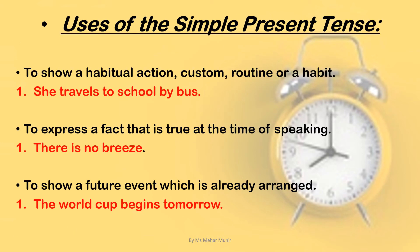Now let's understand the situations when we use simple present tense. First, to show a habitual action, custom, routine, or habit — for example: She travels to school by bus. This shows her daily routine, so we use simple present tense. Second, to express a fact that is true at the time of speaking — for example: There is no breeze. Third, to show a future event which is already arranged — for example: The World Cup begins tomorrow. The word 'tomorrow' shows it's in the future, but since it's already arranged, we use simple present tense.